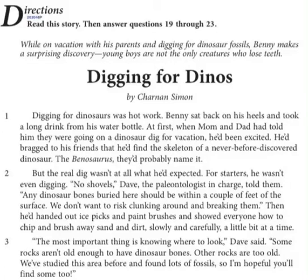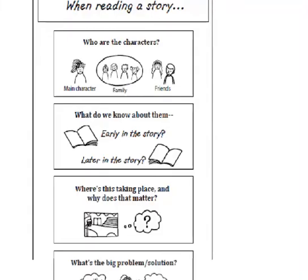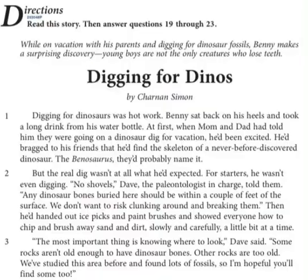First, let me think about what we will especially notice. What pays off to notice in a story? Since I know it's a story, I know it's going to follow the story elements. There's going to be some type of problem in the story, so I'm going to be on the lookout for that. As we read, we're going to pay attention to things on that chart — who's the character, what do we know about them early and later in the story, where does the story take place and why does that matter, and what's the big problem.